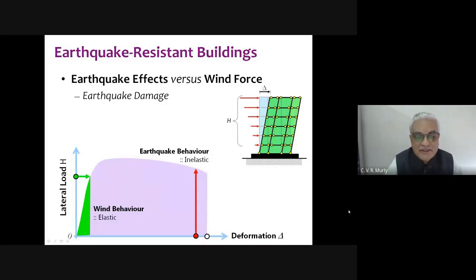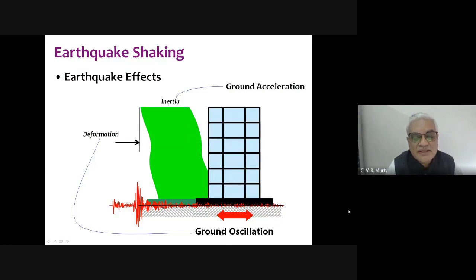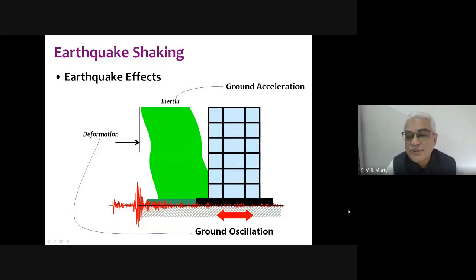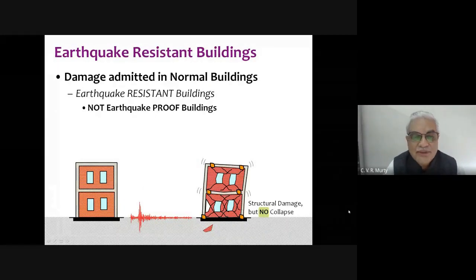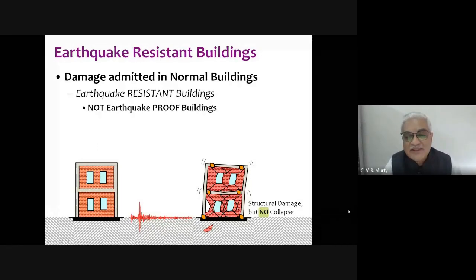Ground oscillation causes the building to oscillate, which induces deformation, stresses, bending moments, shear forces, and axial forces — all driven by inertia forces concentrated at floor levels. One important point: we don't build earthquake-proof buildings; we build only earthquake-resistant buildings. For the known level of shaking, we design them to resist with damage, but if the shaking level exceeds the design earthquake, there is no guarantee against collapse.